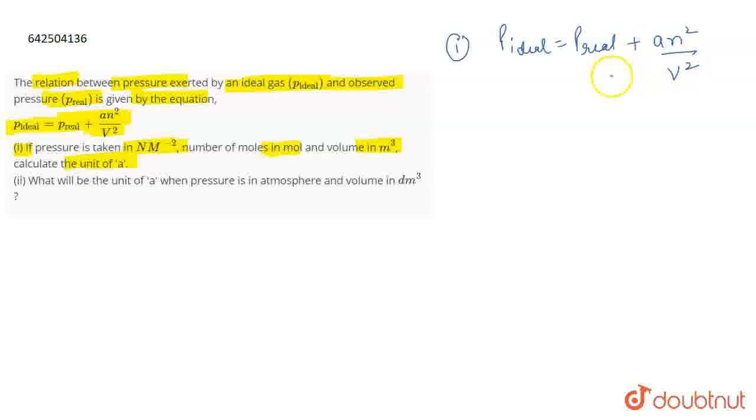The very important thing that you need to keep in mind is that two quantities can be added only when they have the same unit. P real can be added to A n squared by V squared term only if they have same units. So two quantities can be added if they have same units.